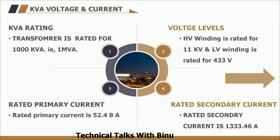The next parameter is the KVA rating of the transformer. We have already discussed how to select the KVA rating of a transformer in our last video — I have given the link in the description box. Coming to our example, the rated capacity is 1000 kVA, which means 1 MVA. The rated voltages are 11 kV on the HT side and 433 V on the LT side. The rated current on the HT side is 52.48 amperes and on the LT side is 1333.46 amperes.